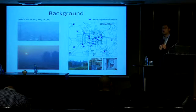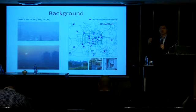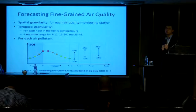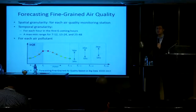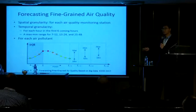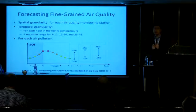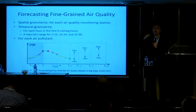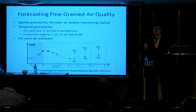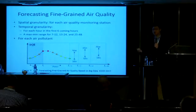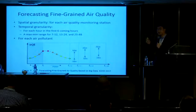Besides monitoring real-time air quality, there's a rising demand on forecasting the air quality in the near future — so what's the air quality going to be tomorrow? In this project, we forecast air quality for each monitoring station. For the next six hours, we predict a real value number for each hour. And for the next 7 to 12, 13 to 24, and 24 to 48 hours, we predict a range of minimal and maximum air quality index. So we emphasize this is a fine-grained prediction — instead of generally saying tomorrow is good or not, we predict for each air quality monitoring station, with temporal fine granularity, and for each kind of air pollutant.